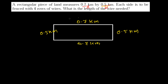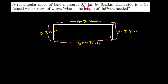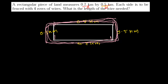This is our length and breadth of our rectangular field. According to the question, the land owner wants to fence it with four rows of wires. Suppose here is one pillar, second pillar, third pillar, and fourth pillar. He wants to fence it — one time, two times, three times, and four times.